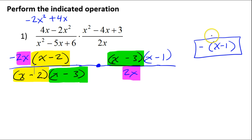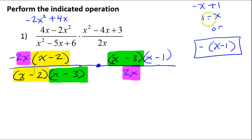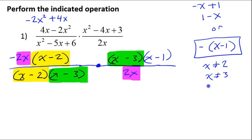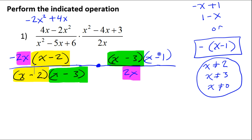So negative times x minus 1 is the final answer. Another form would be negative x plus 1, which is the same as 1 minus x, but I'll leave it as is. For excluded values: x cannot equal positive 2 because of this denominator, x cannot equal positive 3 because of that denominator, and x cannot equal 0 because of the 2x. The negative 1 in the numerator and x minus 1 have nothing to do with excluded values.